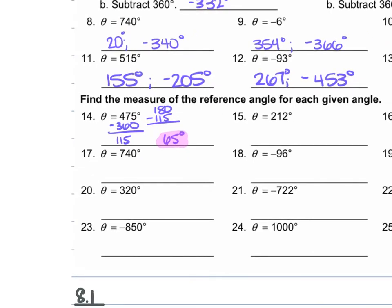For number 15, we're given 112 degrees. If we take 360 and subtract 212, we get 148 — but that's not what we're looking for. So we do 180 minus 148 and get 32 degrees. That's a positive acute angle, so we're good.